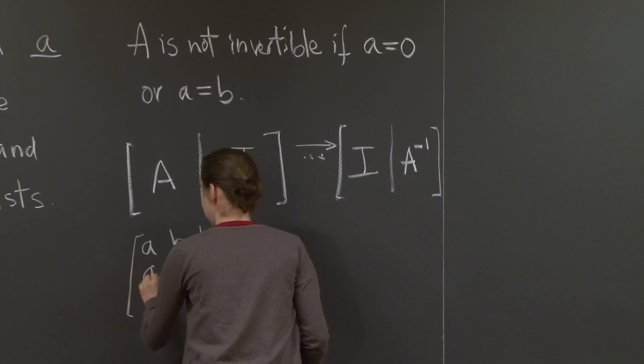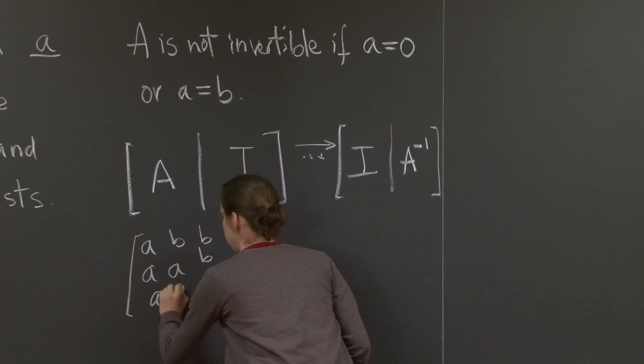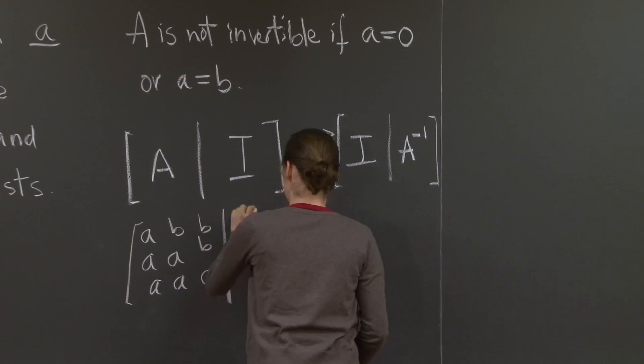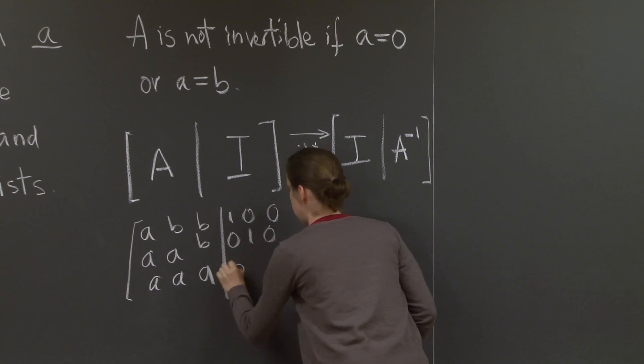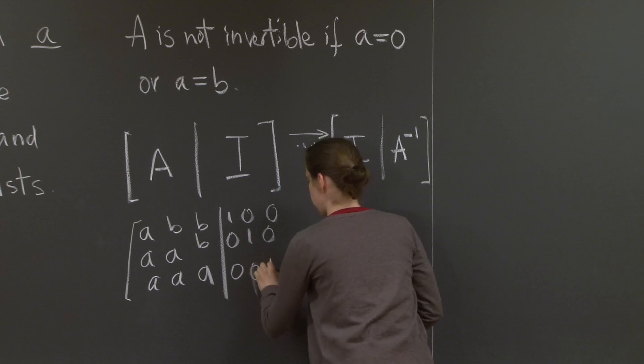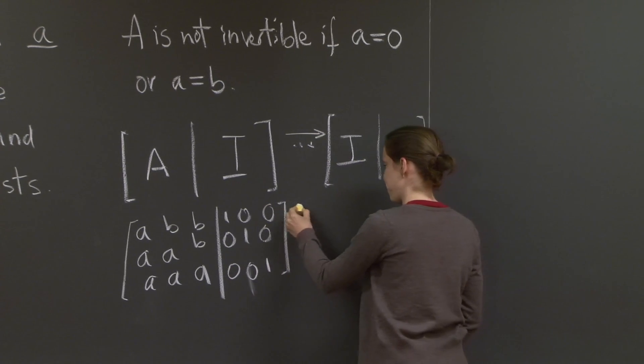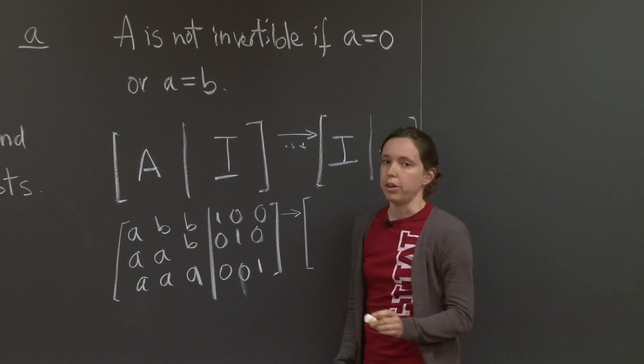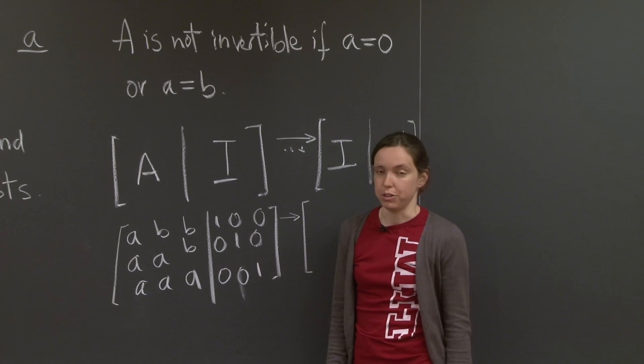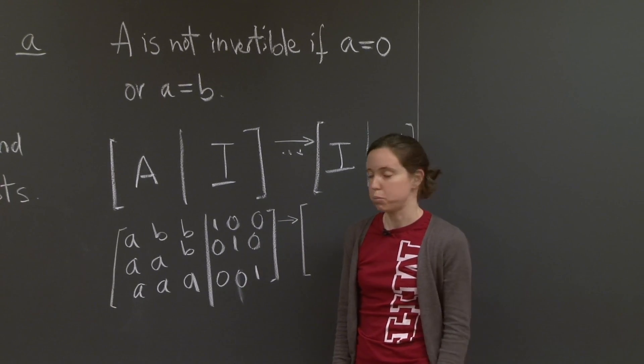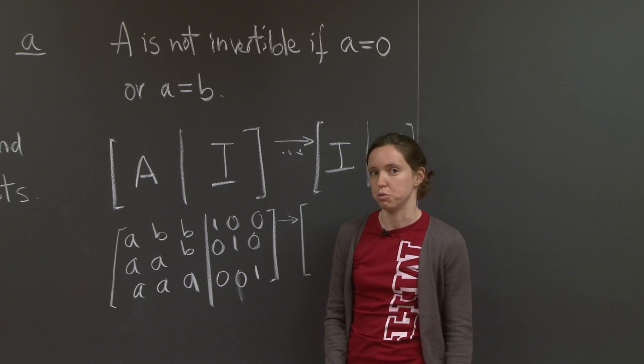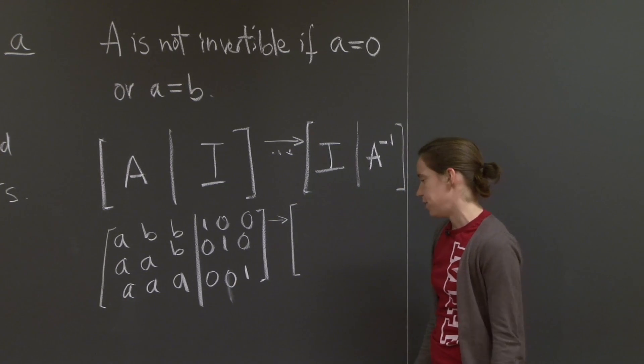A, b, b, a, a, b, a, a, a. And my identity matrix next to it. And now I know you learned about elimination in the past recitation. So I'll do the first few steps slowly. And then I'll just write the solution for the last steps. All right.